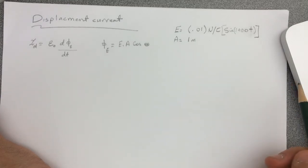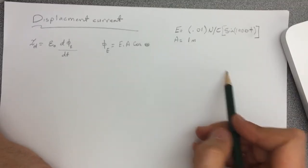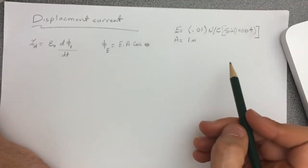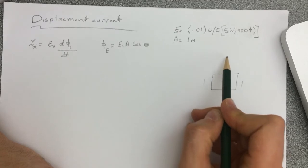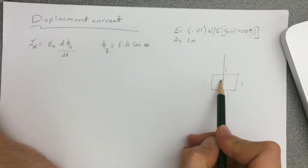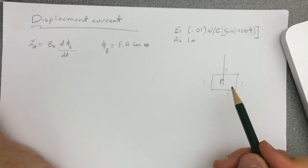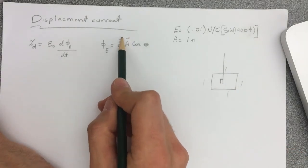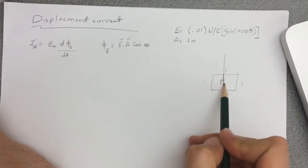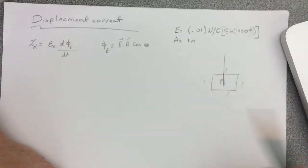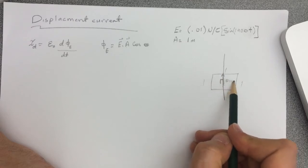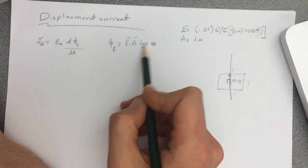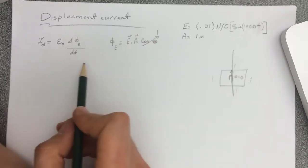So if you look at it, the theta here is not 90 degrees because if you look at it here, this is the one meter area and then the electric field is perpendicular to it. So we're looking at when we say E dot A, both of them are vectors, so we're looking at the perpendicular to the area. So the angle between them is zero here. Theta is zero, so cosine of theta is one.